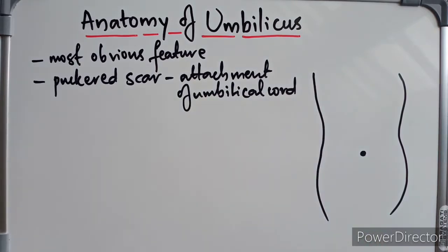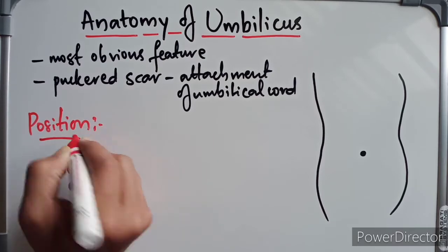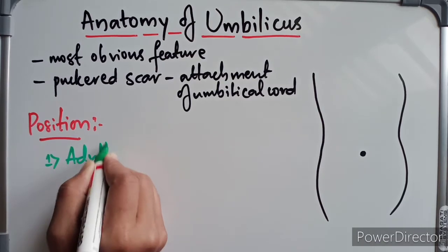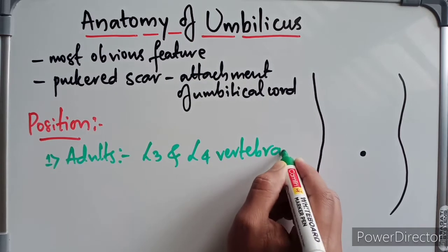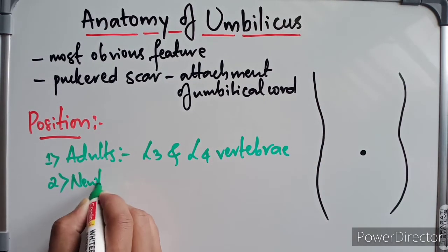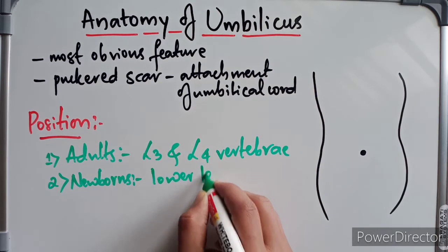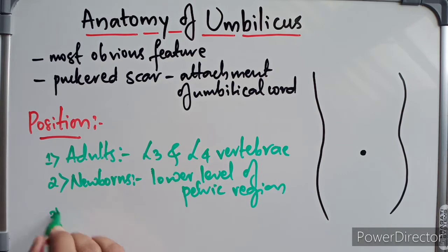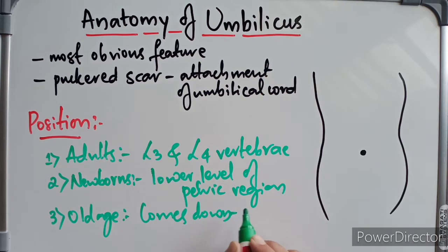Now we are going to look at the position of the umbilicus. The position will vary according to age. In adults, the umbilicus lies at the level of the L3 and L4 vertebrae. In neonates, it is at a slightly lower level in the pelvic region. In old age it comes down to the level of the abdominal muscles.